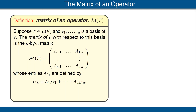We have previously defined the matrix of a linear map from one vector space to another with respect to two bases, one basis for the domain and the other basis for the target space. Now we are dealing with operators, which are maps from a vector space to itself. We define the matrix of an operator as previously, but now we just have one basis, a basis of the vector space V. It gets used in both the domain space and in the target space, which in this case are the same.